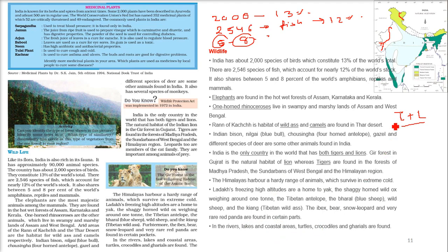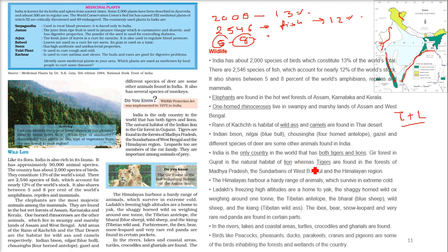In rivers, lakes, and coastal areas, we find turtles, crocodiles, and gharials. Birds found in India include peacocks, pheasants, ducks, parakeets, cranes, and pigeons, found in various forests and wetlands of the country.